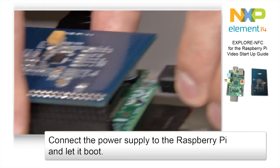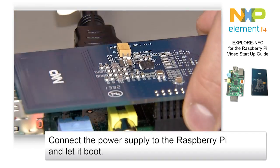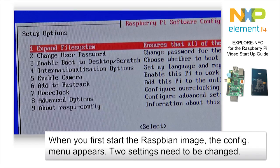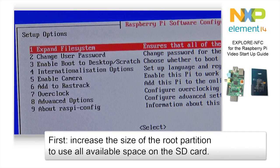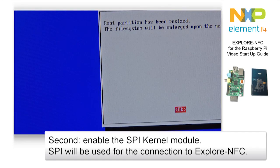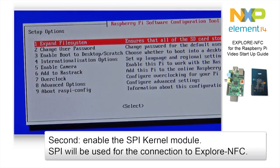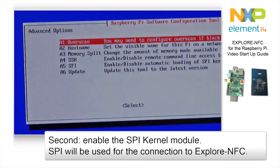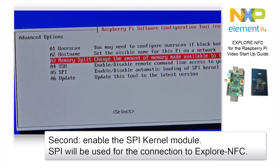Finally, connect the power connector and start the Raspberry Pi. On first startup, the configuration menu appears. You will need to change two settings. First, you need to resize the file system to make optimal use of the available space on the SD card. Second, you need to enable the SPI kernel module.